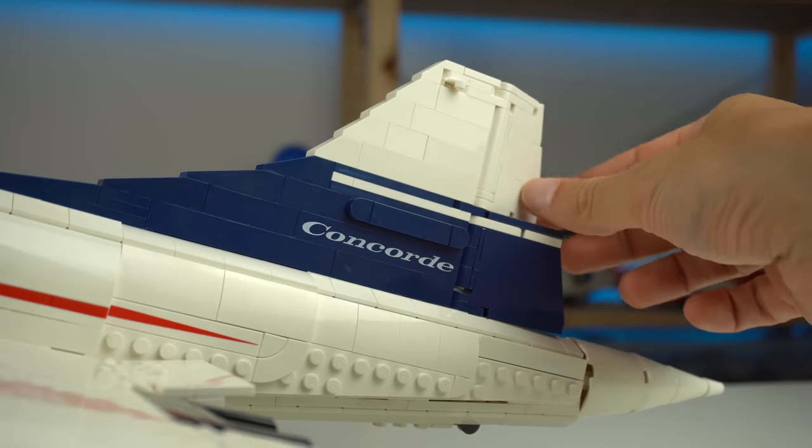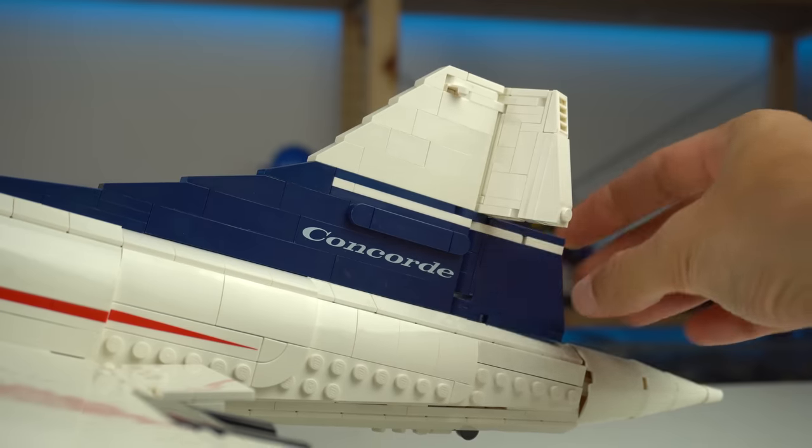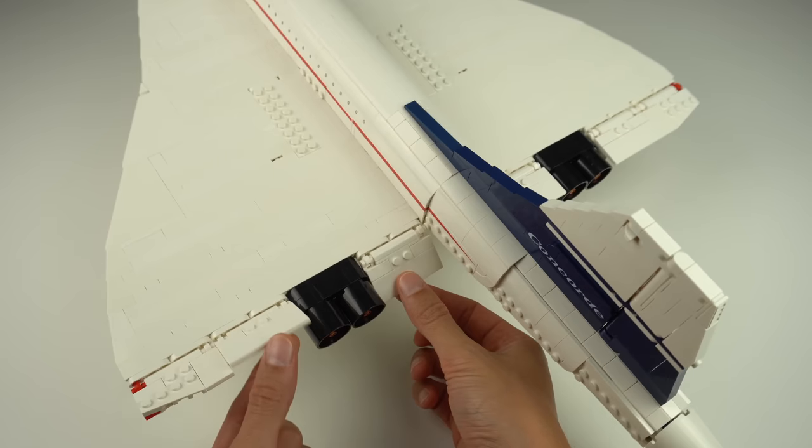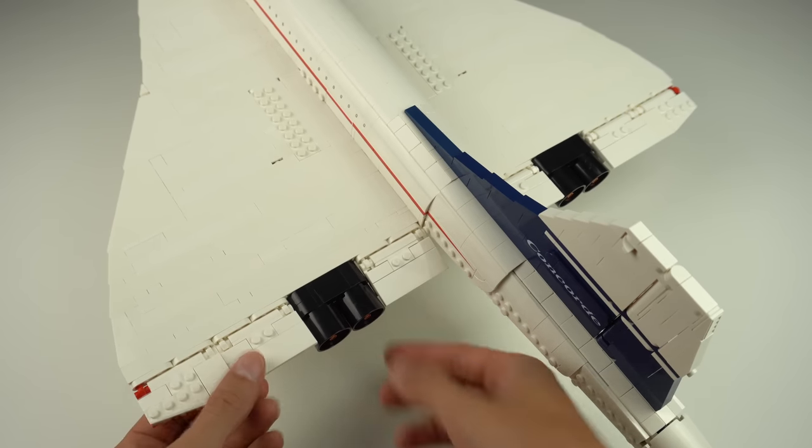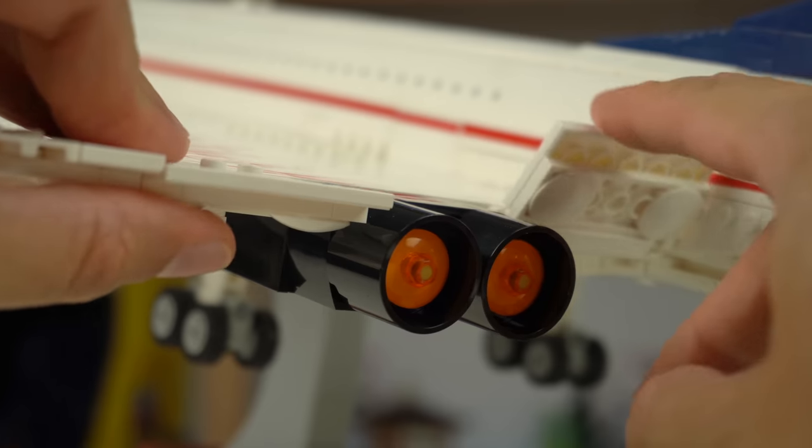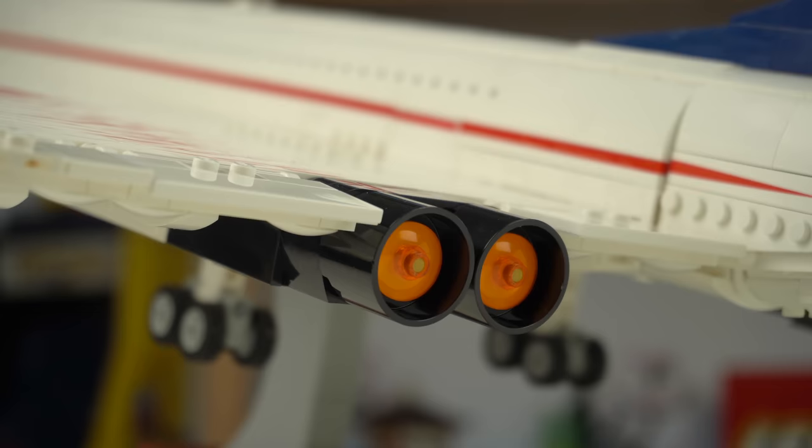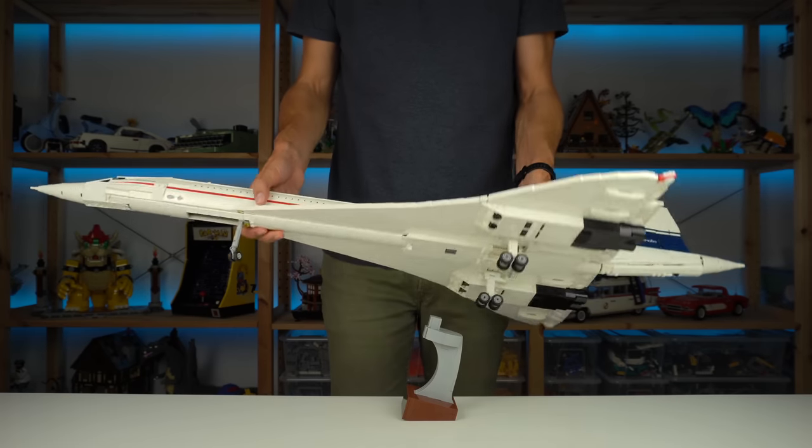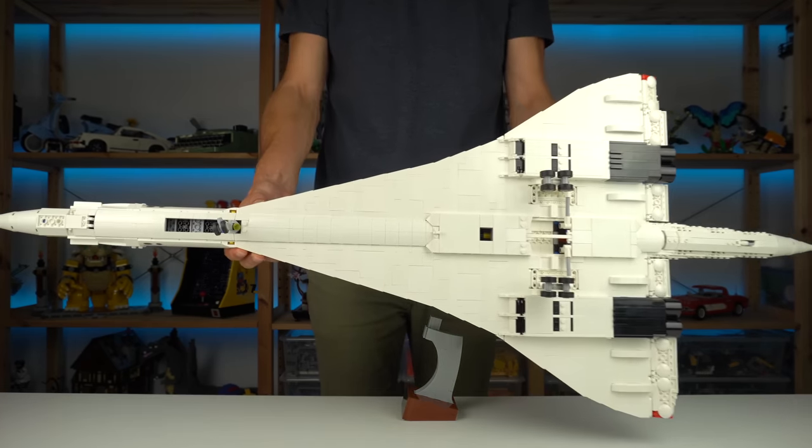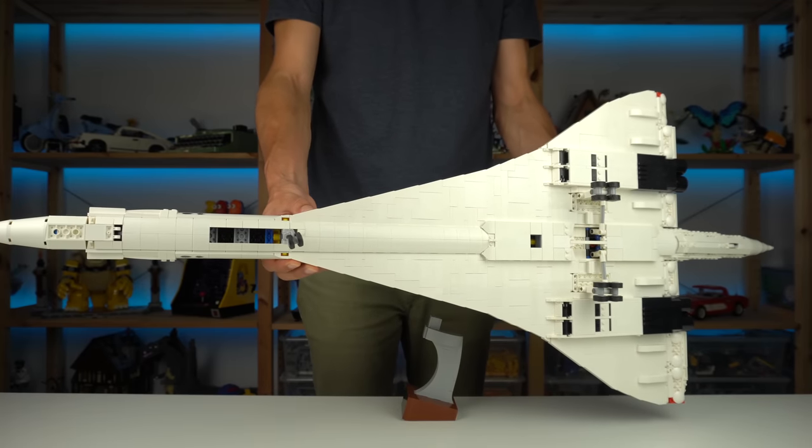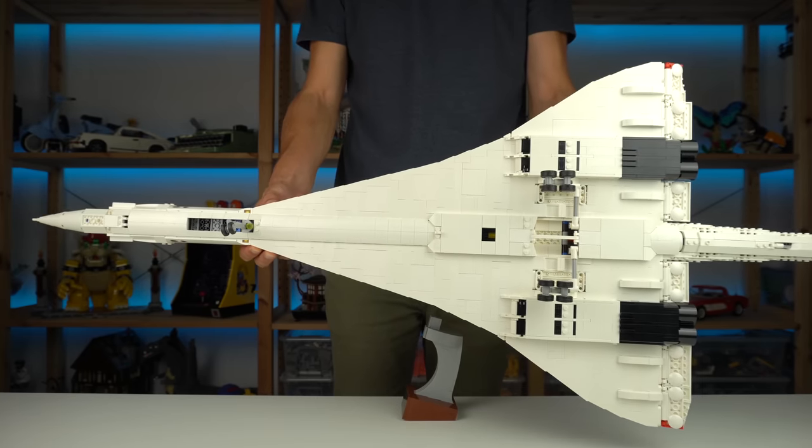The tail fin has the independent rudders the actual aircraft had, as well as all of the elevons by the delta wings. Next to them we get to see the Olympus engines that propel the plane at supersonic speeds and it's also a good time to mention how good looking the underside of the model is, something that isn't usually that carefully designed in other LEGO models.